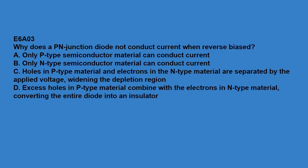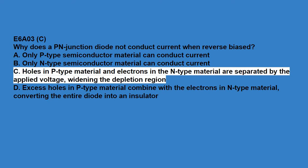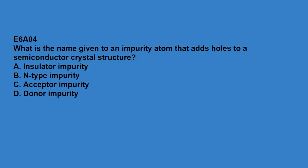E6A03: why does a PN junction diode not conduct electric current when reverse biased? Holes in P-type material and electrons in the N-type material are separated by applied voltage, widening the depletion region. E6A04: what is the name given to an impurity atom that adds holes to a semiconductor crystal structure? Acceptor impurity.